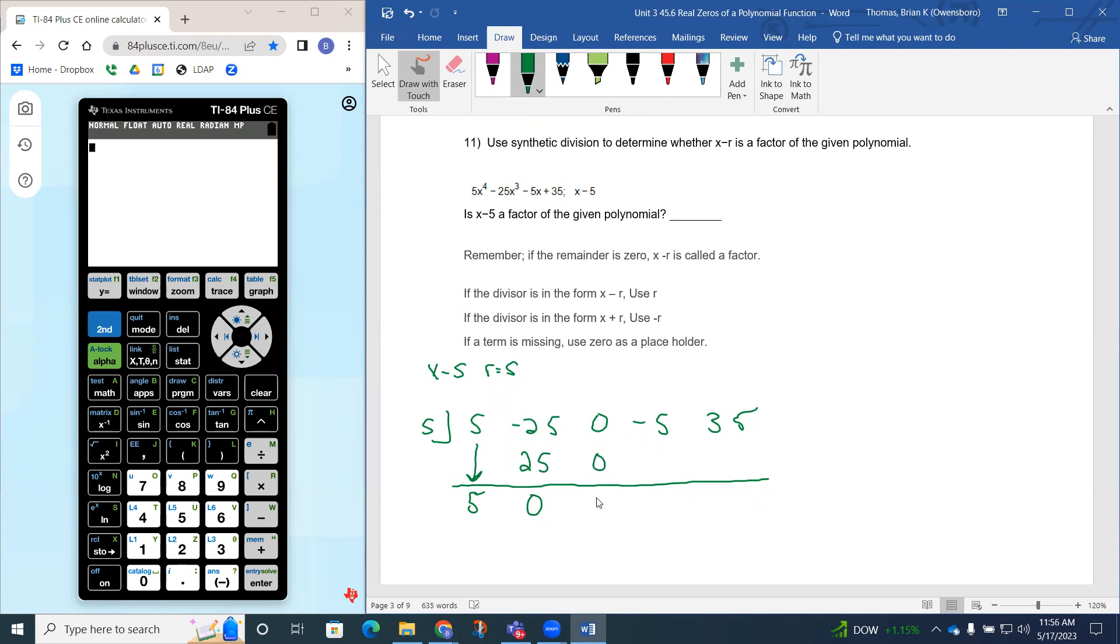0 + 0 is 0, 0 + 0 is 0, and then 5 times 0 again is 0. -5 + 0 is -5. 5 times -5 is -25, and 35 + -25 is a remainder of 10.